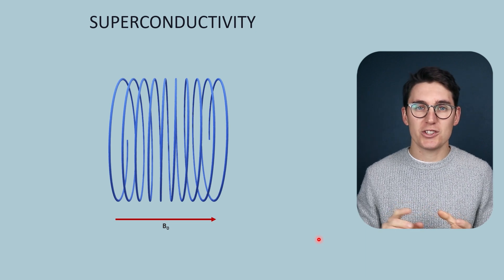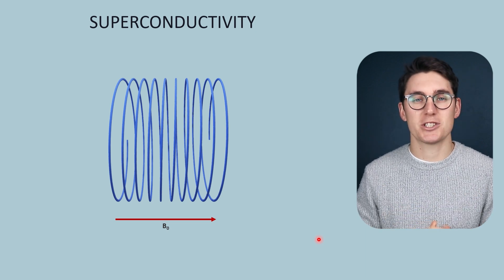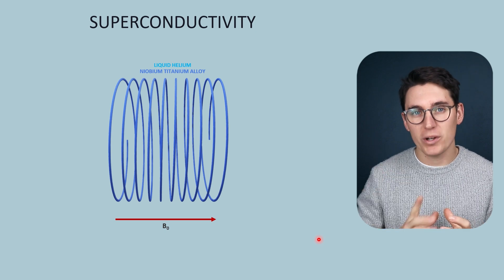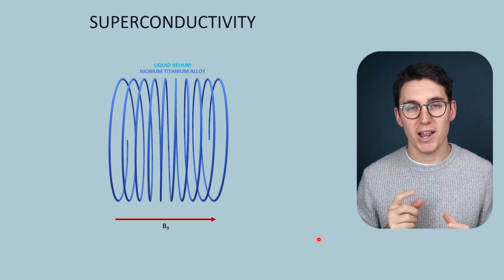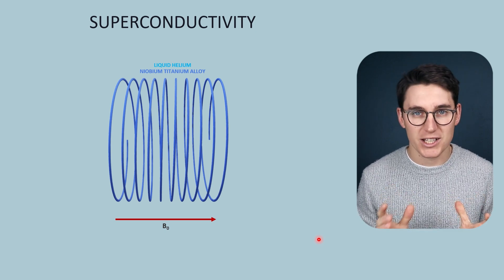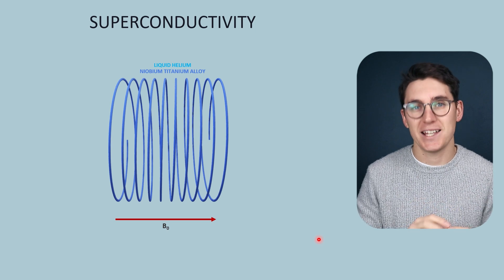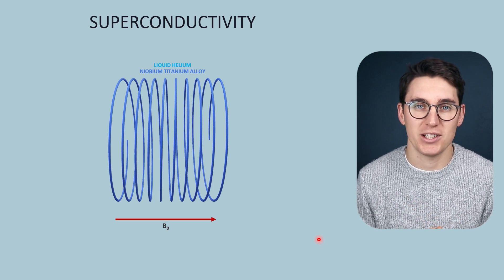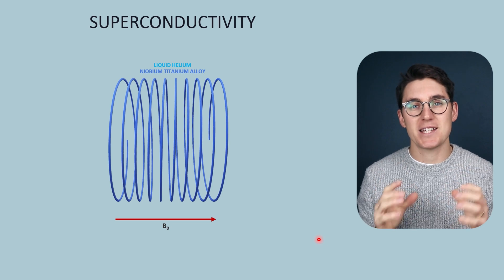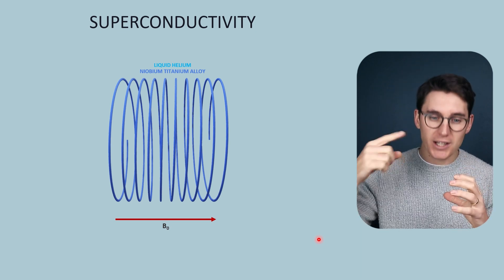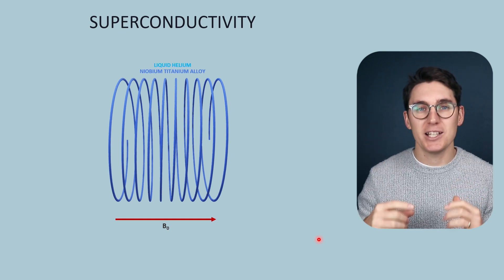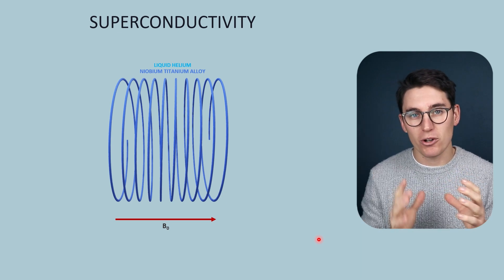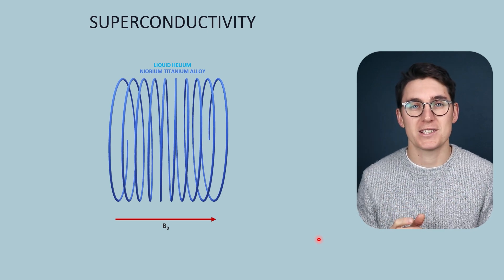In order to achieve this we need to utilize the principle of superconductivity. There are certain materials that at a low enough temperature will act as a superconductor. One such material is niobium titanium alloys, which is generally what's used in MRI machines. In order to keep the temperature low enough we circulate liquid helium around these coils, generally below 4 degrees Kelvin.